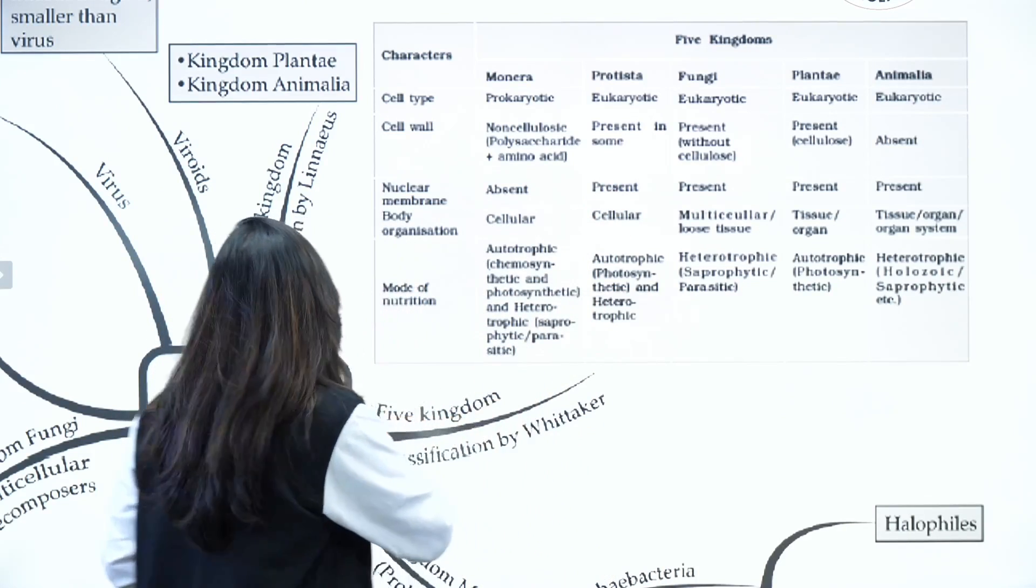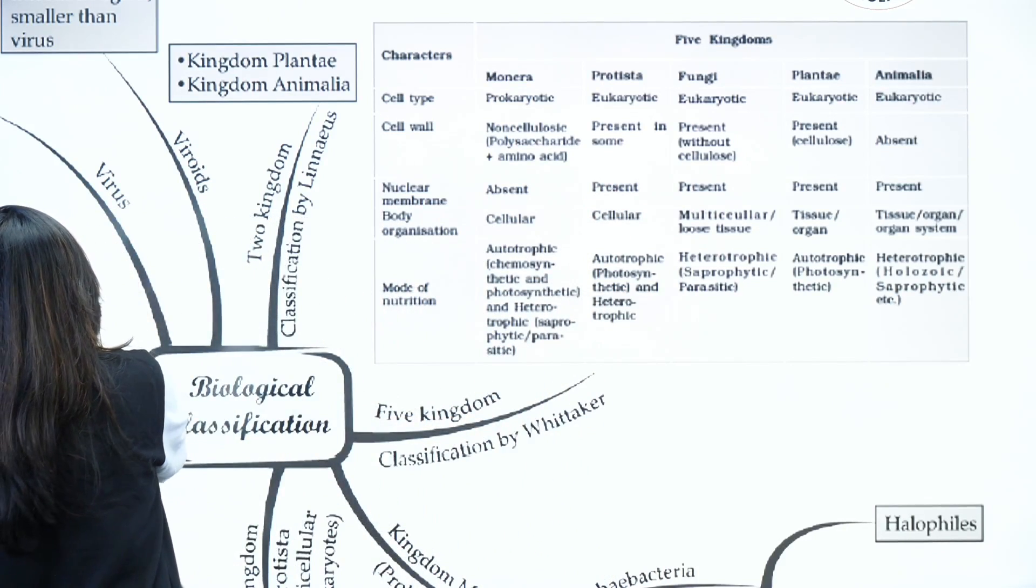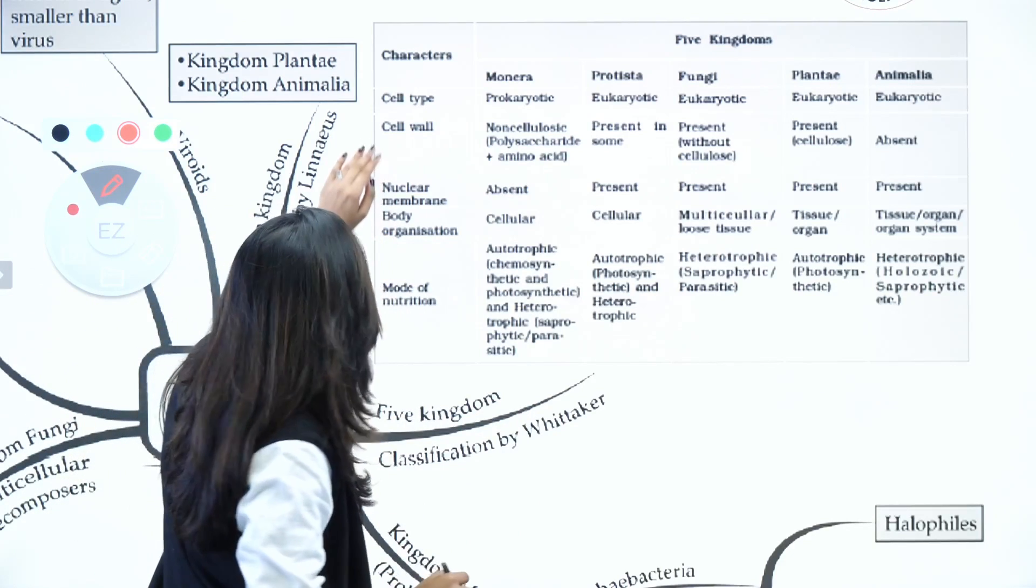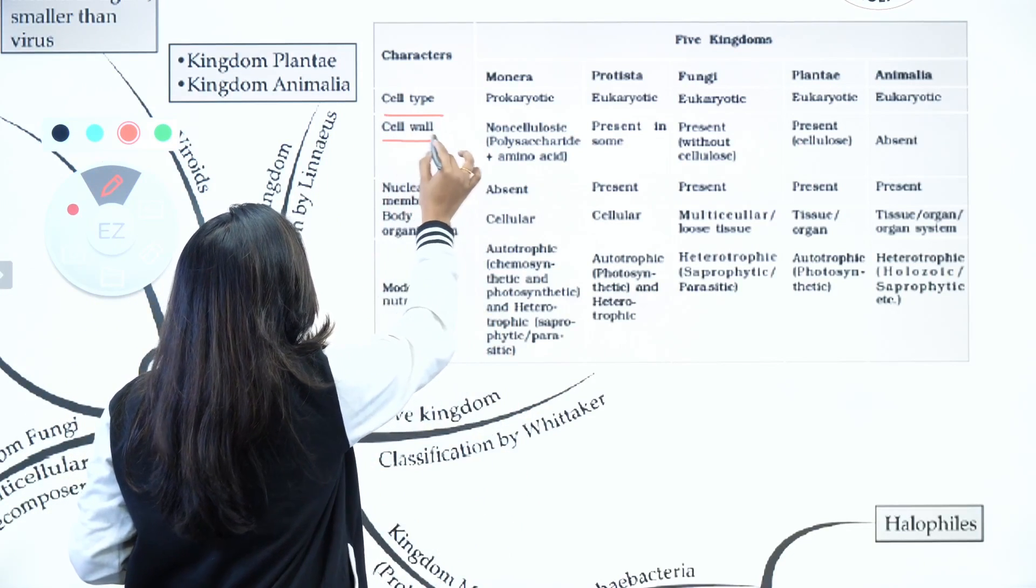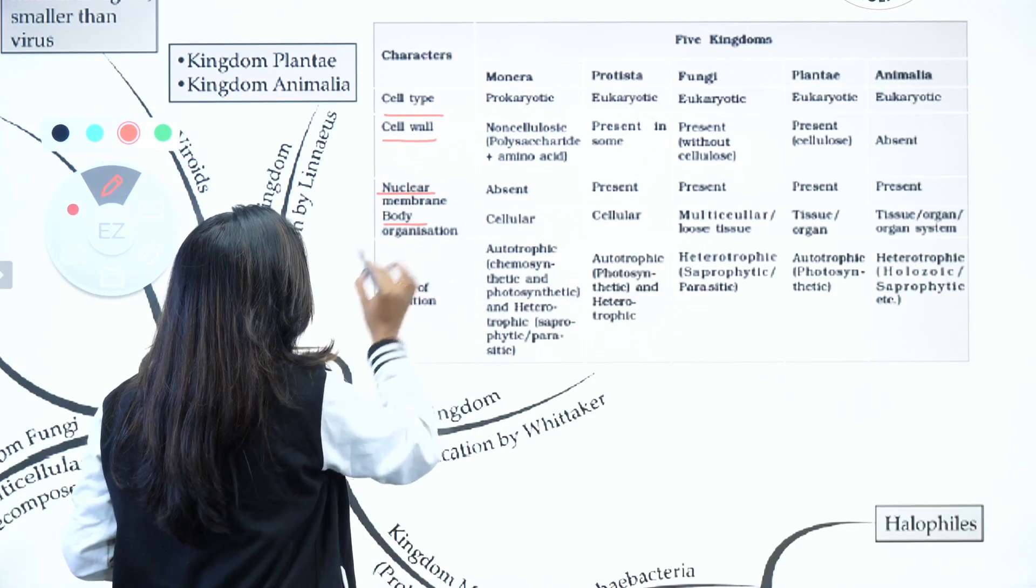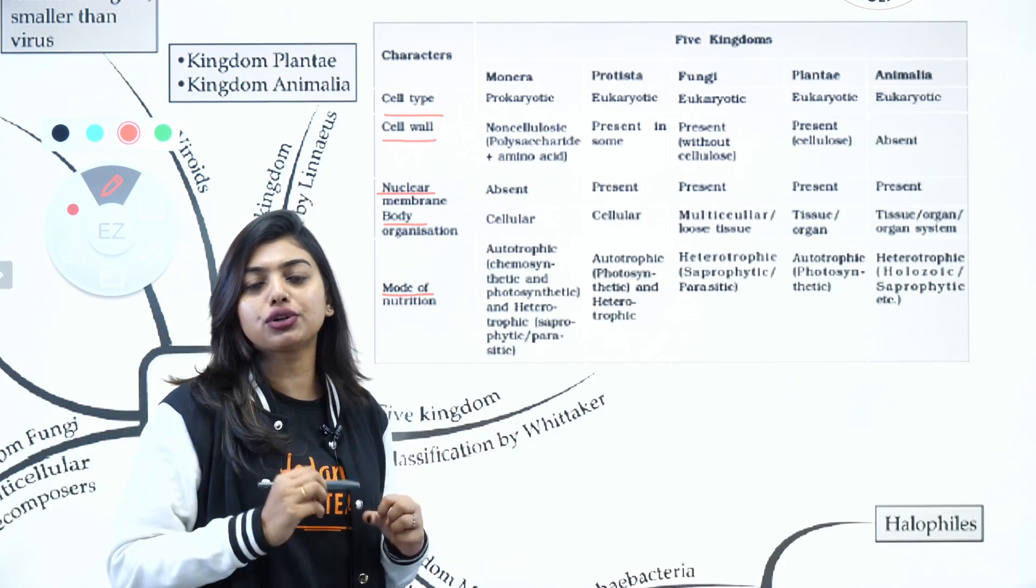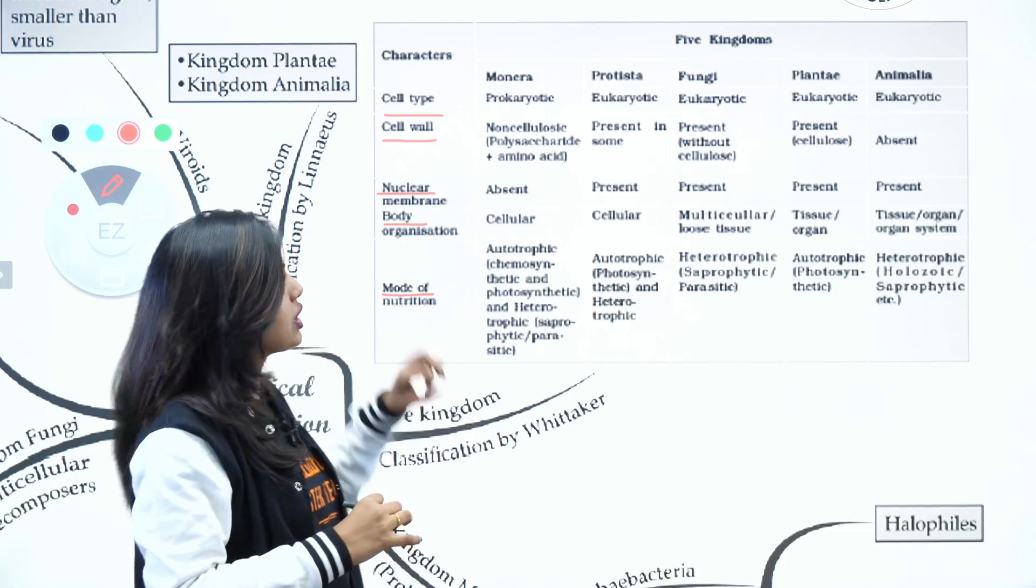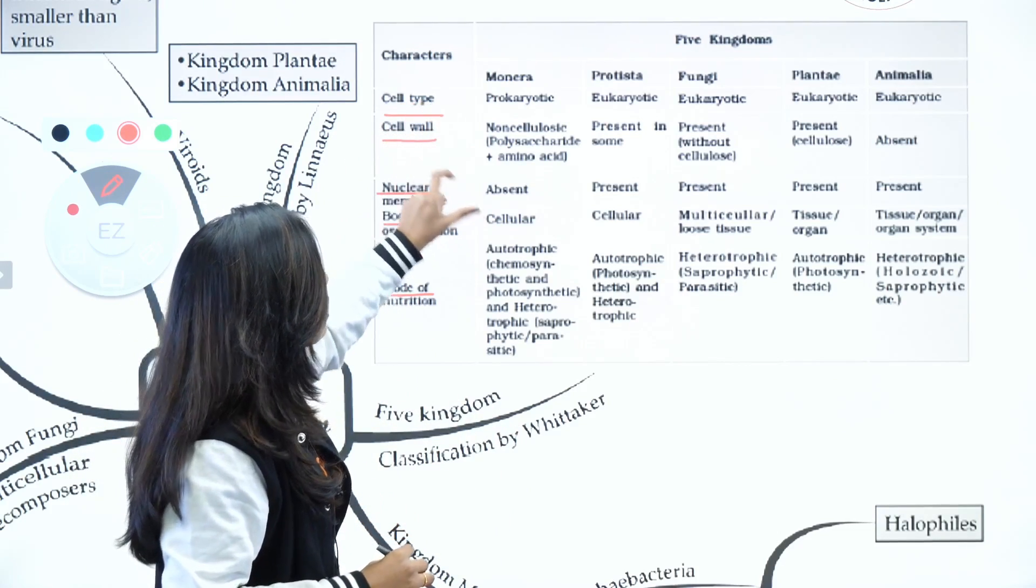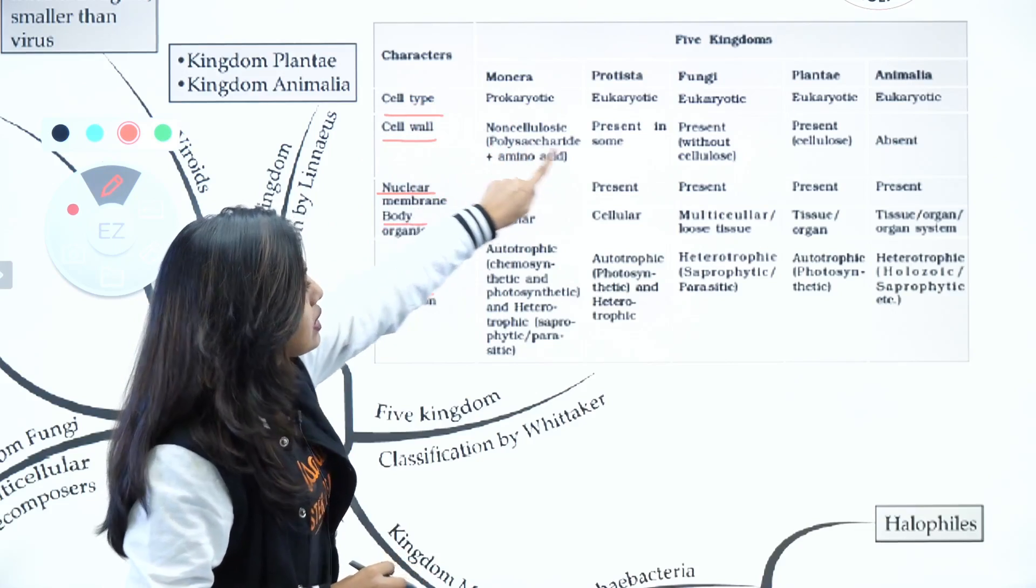What is this box talking about? This box is talking about mainly five things: the cell type, cell wall, nuclear membrane, body organization, and mode of nutrition. These are the five main things that R.H. Whittaker took into consideration while doing this classification.